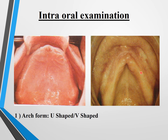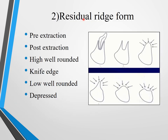Coming to intraoral examination: arch form is either U-shaped or V-shaped. For residual ridges, Atwood's classification applies: Class I (pre-extraction), Class II (post-extraction), Class III (well-rounded high), Class IV (knife edge), Class V (low well-rounded), and Class VI (depressed/resorbed). These variations help in treatment planning and teeth arrangement.